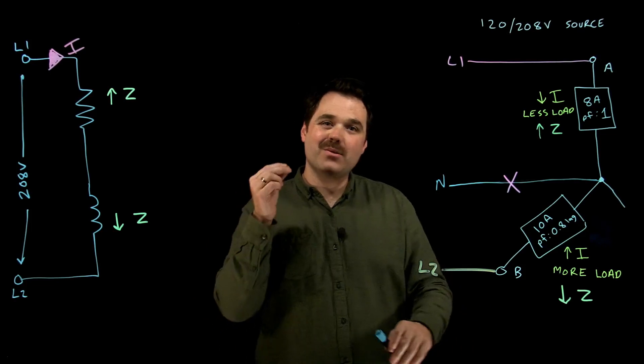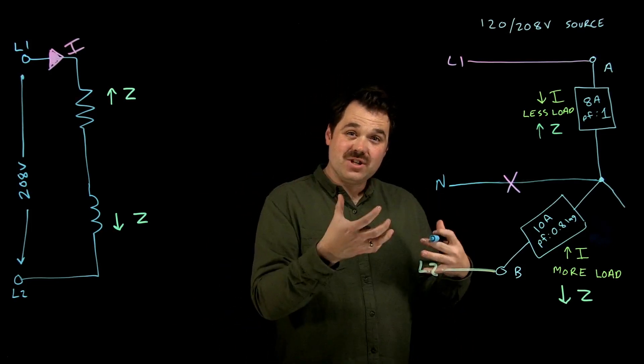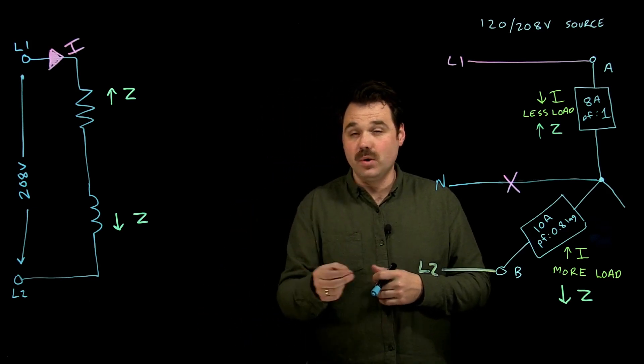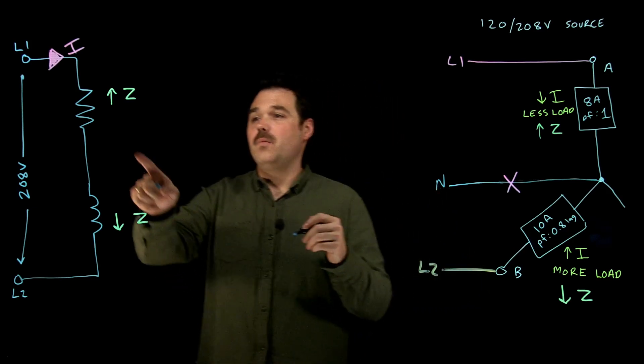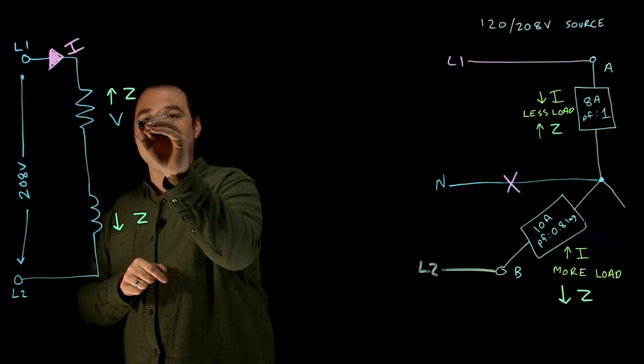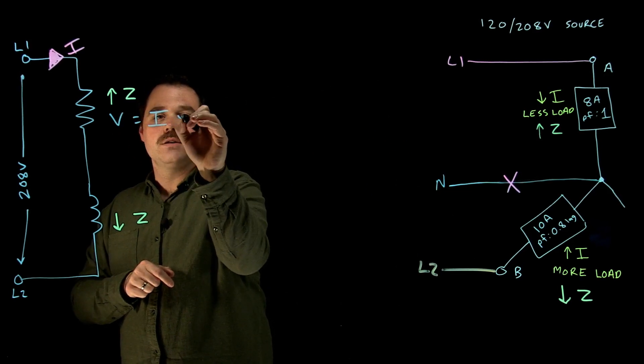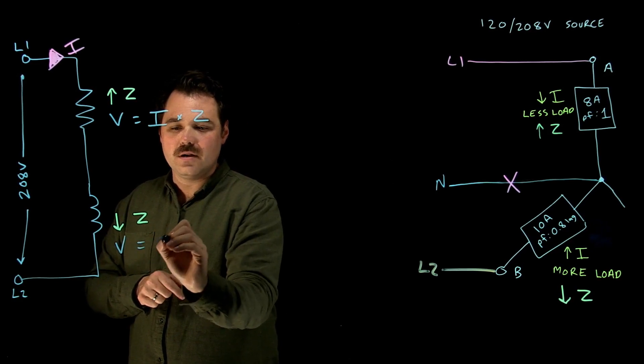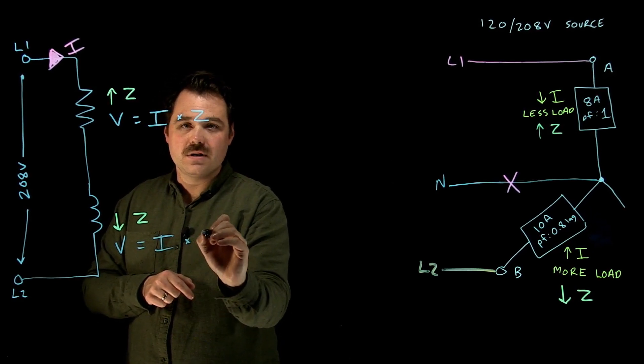What we care about is this: what changes when my neutral breaks is the voltages. We are no longer maintaining phase voltages. In fact, we are going to have a volt drop here, V equals I times Z, and we are going to have a volt drop here, V equals I times Z.